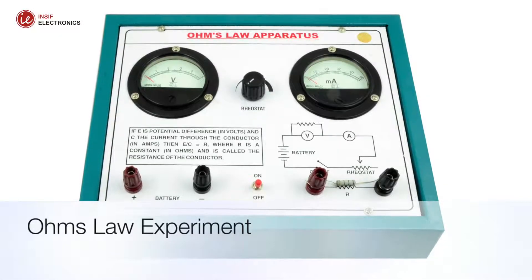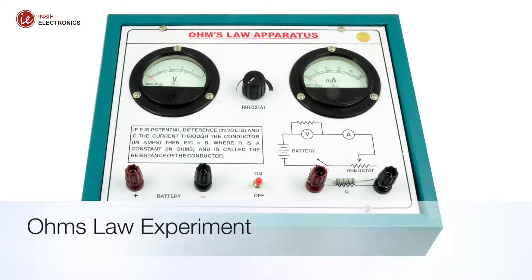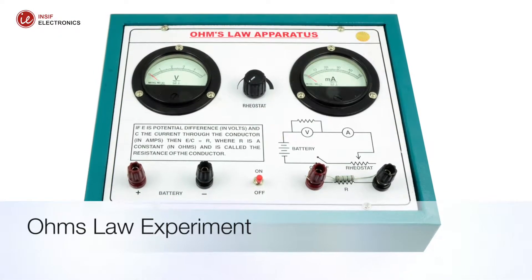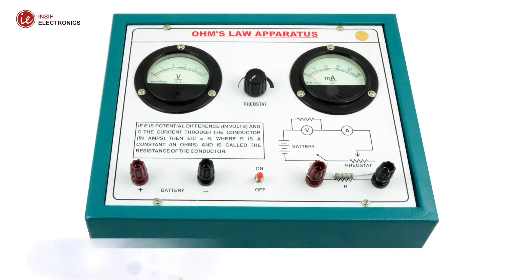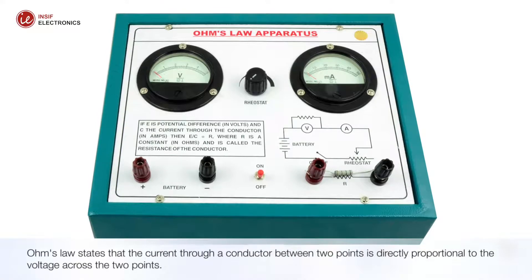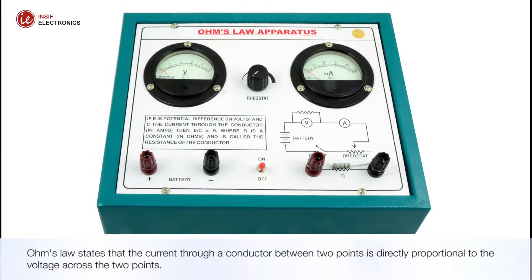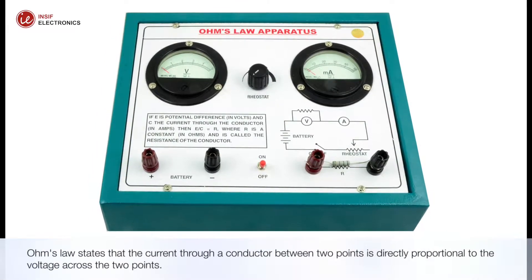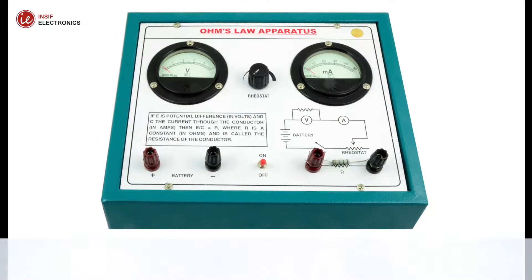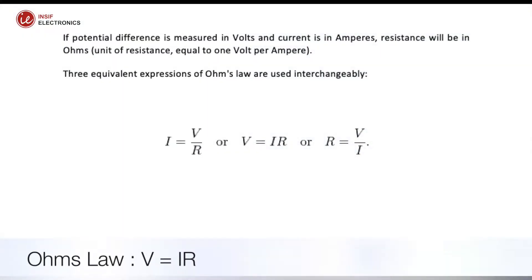Verification of Ohm's law. Ohm's law states that the current through a conductor between two points is directly proportional to the voltage across the two points. Voltage is equal to current into resistance. This is the formula of Ohm's law.